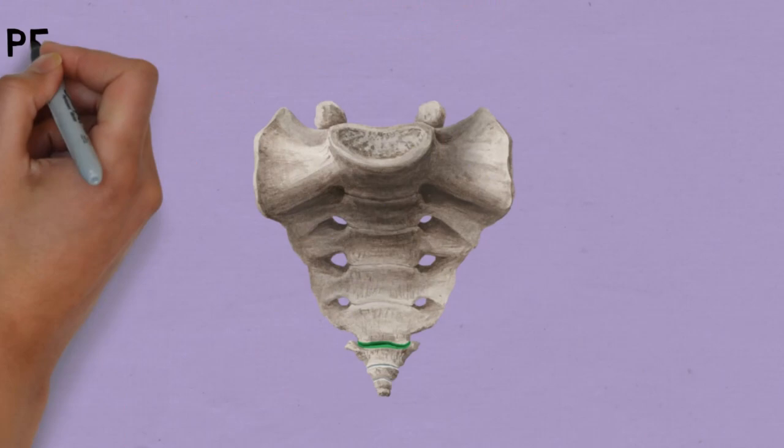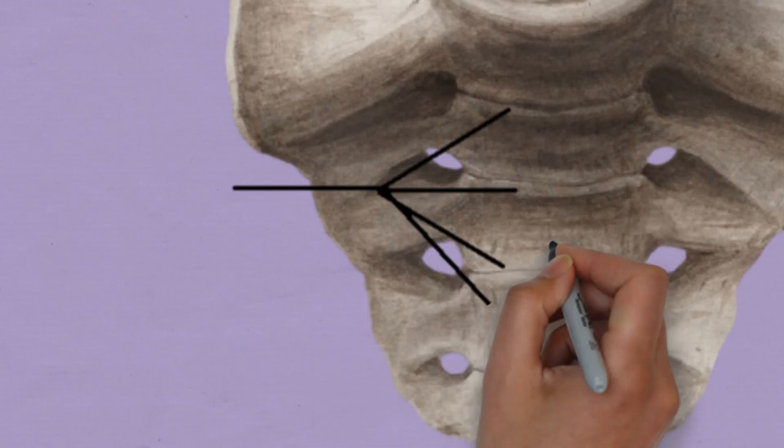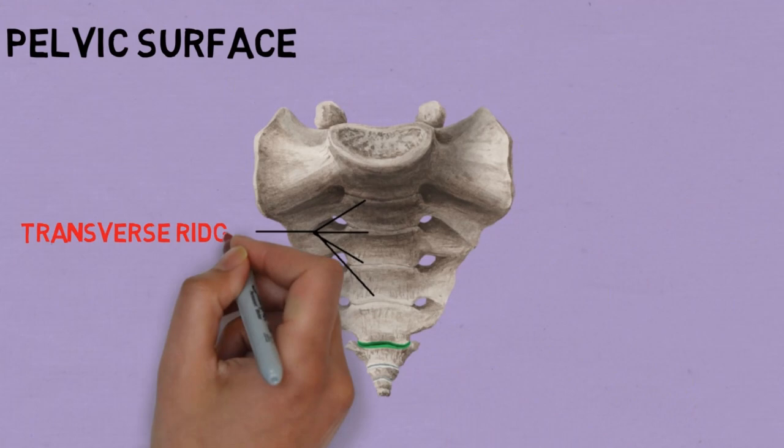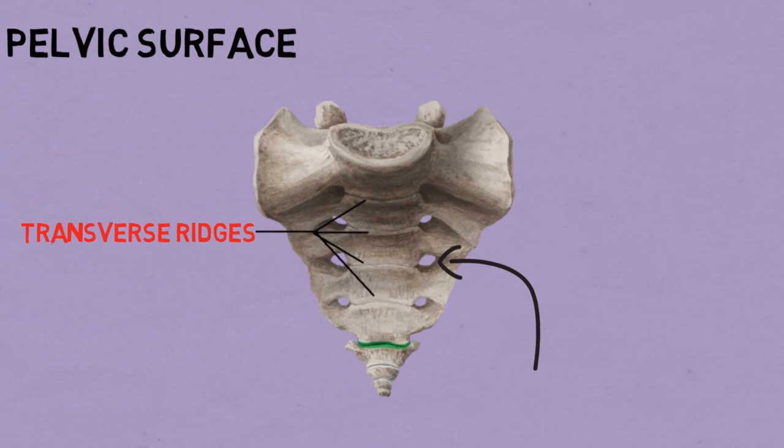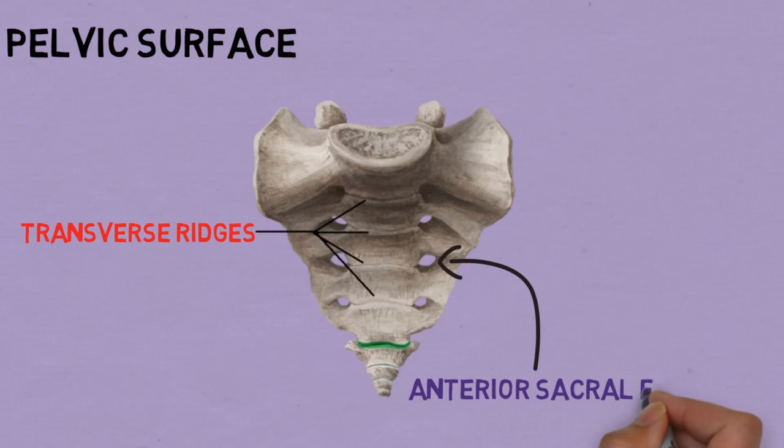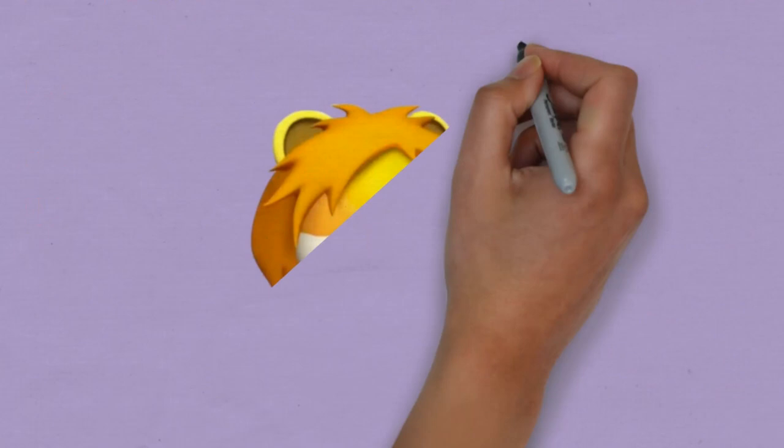As you can see, the pelvic surface is smooth and concave. It has four transverse ridges present on it. These ridges end on each side at the anterior sacral foramen — these are those foramen — and these foramen communicate with the sacral canal, which we will see later on as it is better visible from the dorsal aspect of sacrum.